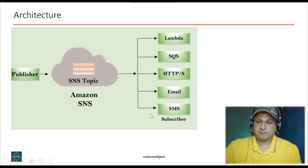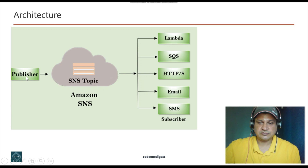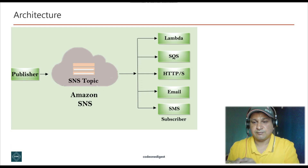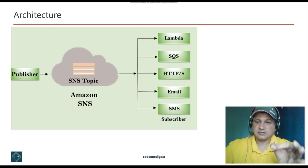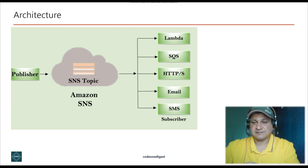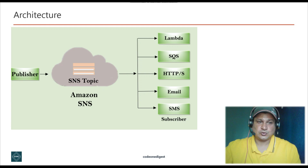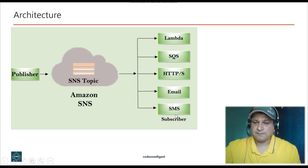Here is the architecture of Simple Notification Service. There will be a publisher — the publisher can be any application in your AWS cloud, or it can be AWS resources like CloudWatch. The publisher can even be Lambda or any other AWS resource that has the capability to send messages. Since SNS is based on a pub/sub model, there will be a publisher of a topic and one or more subscribers. The publisher will publish a message onto the SNS topic, and then subscribers will receive that message.